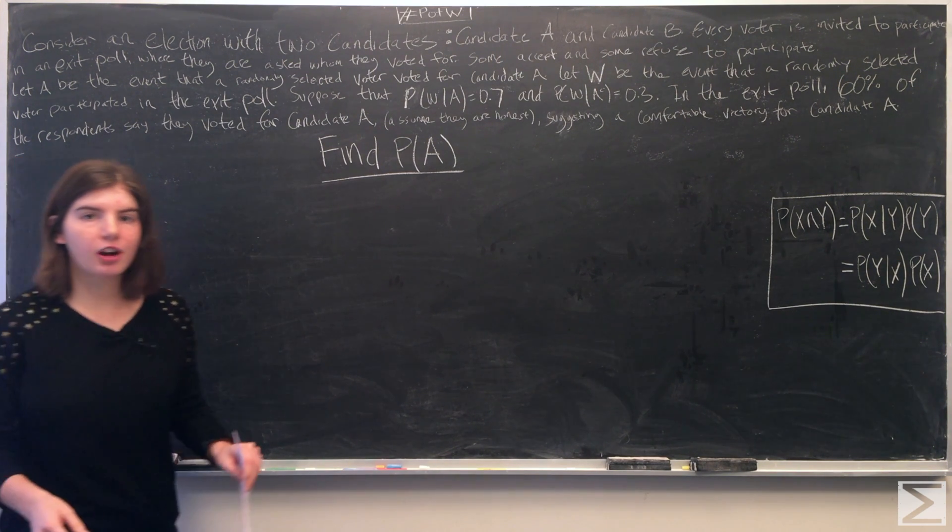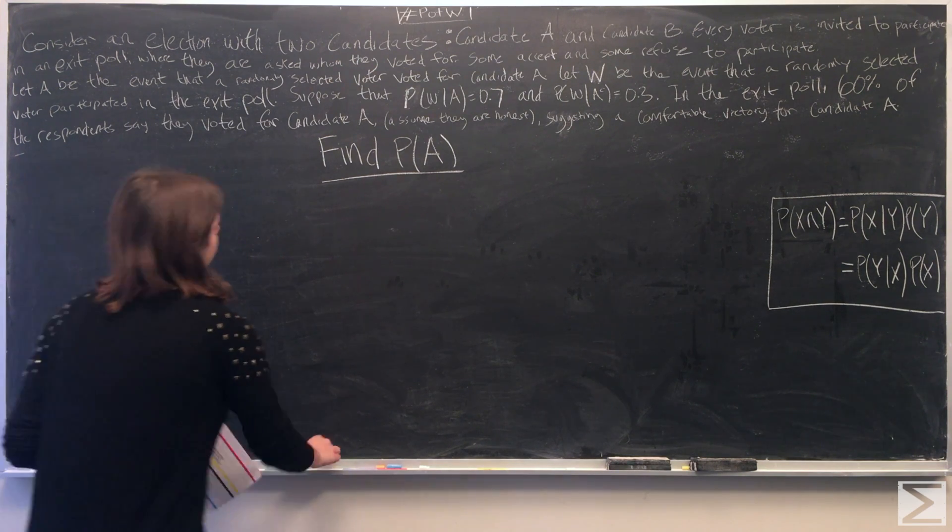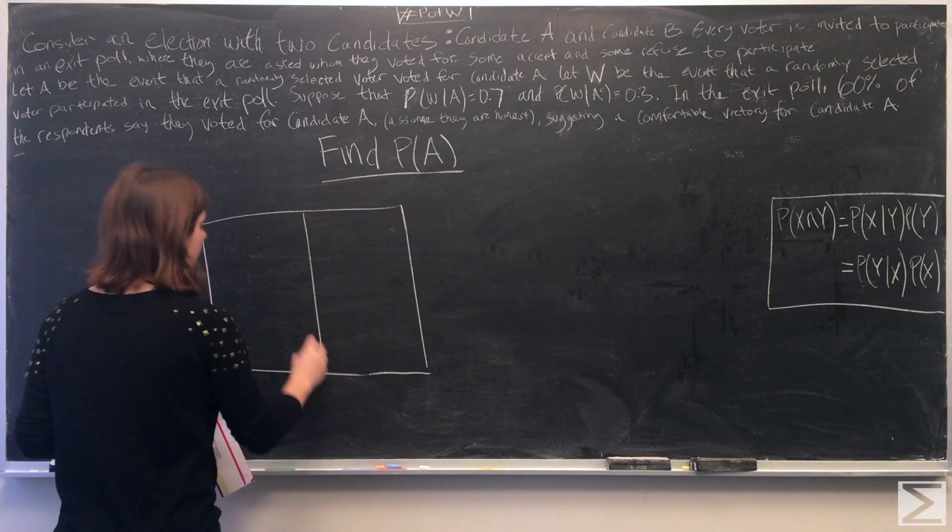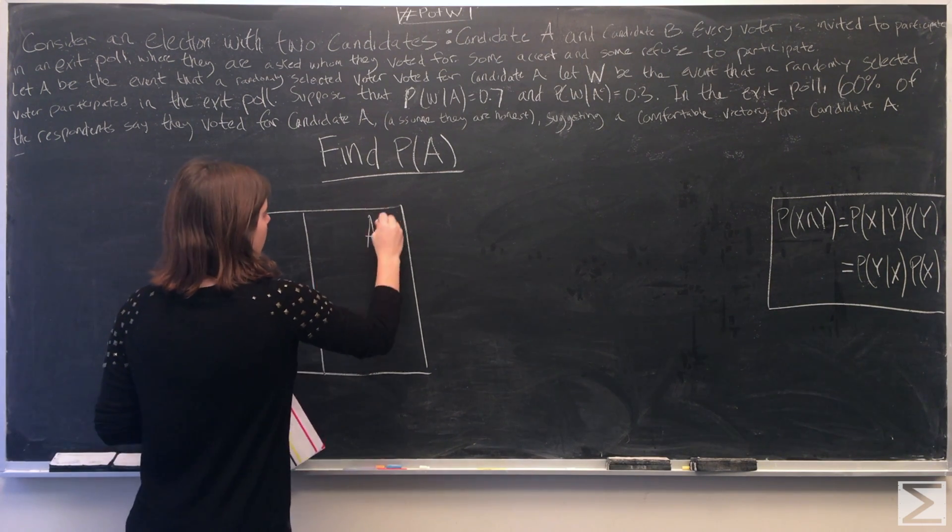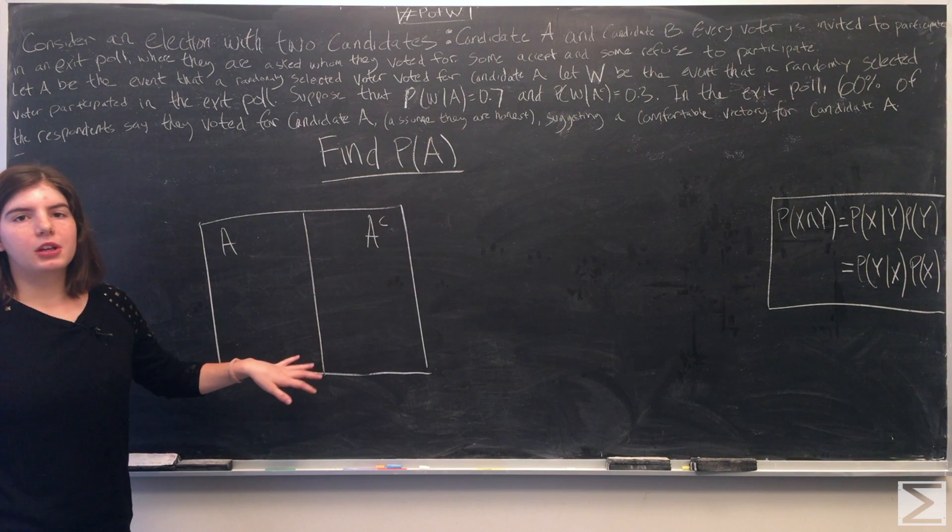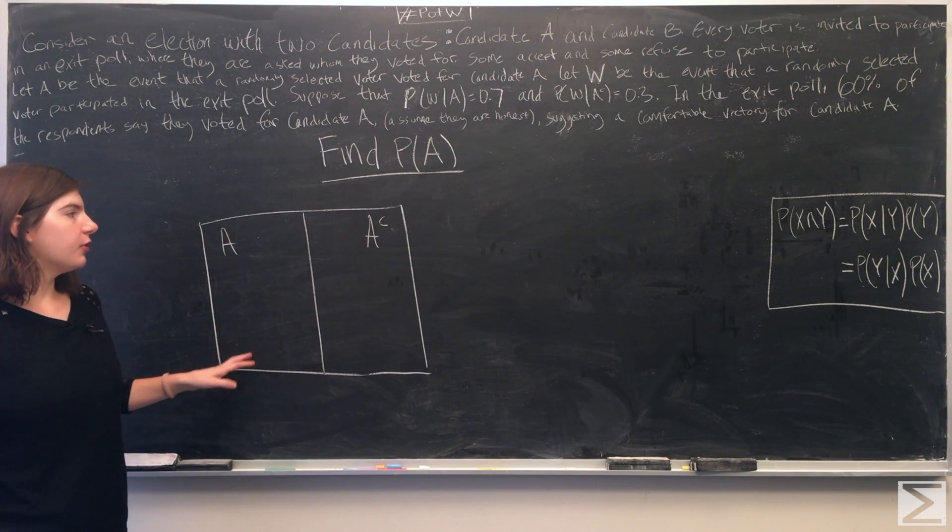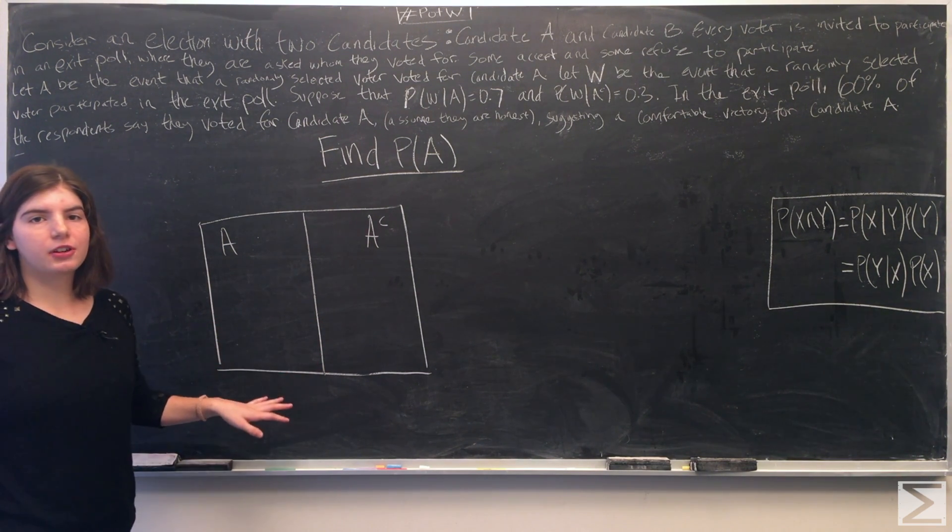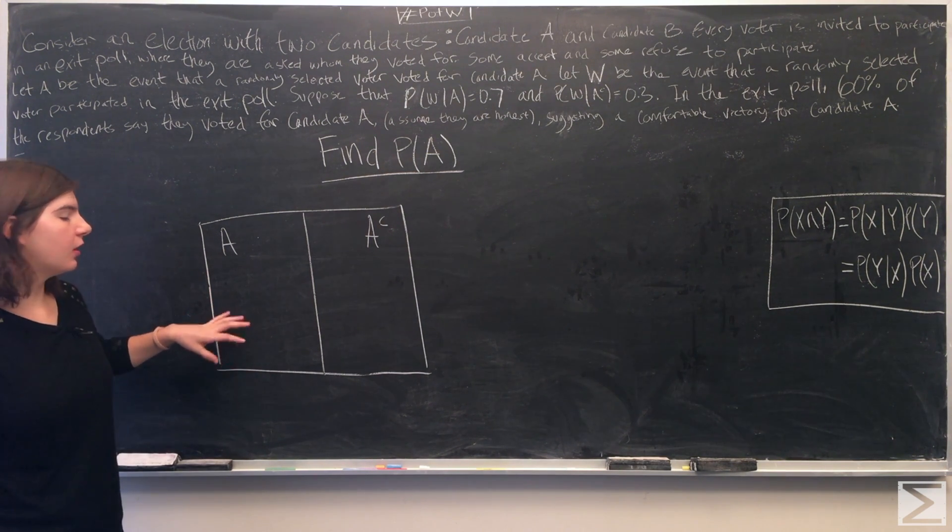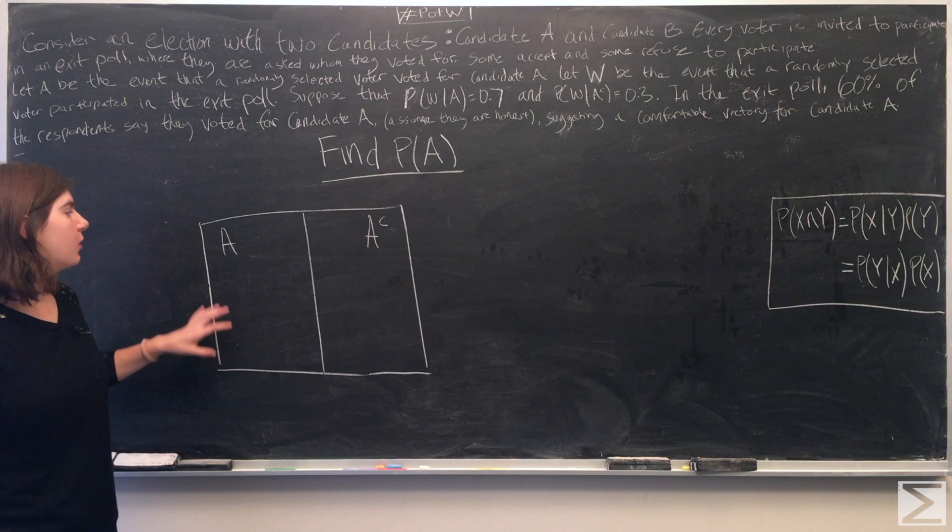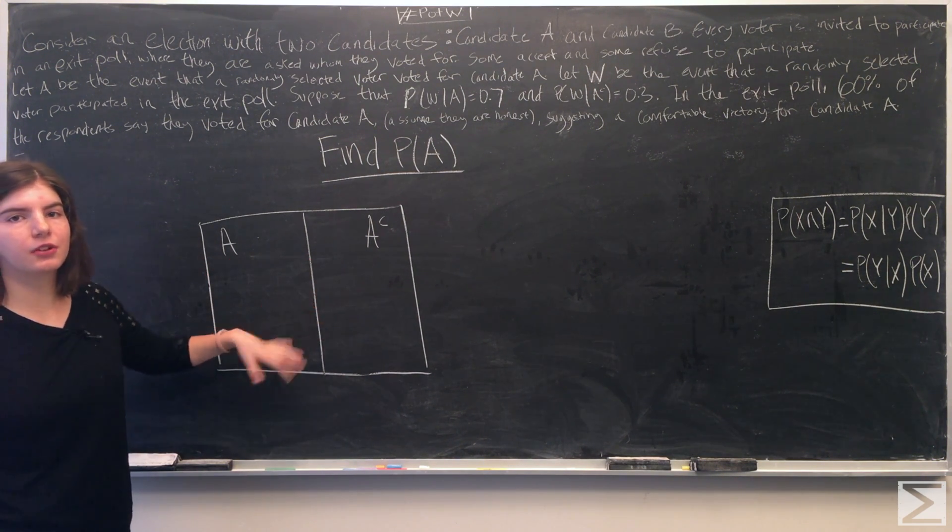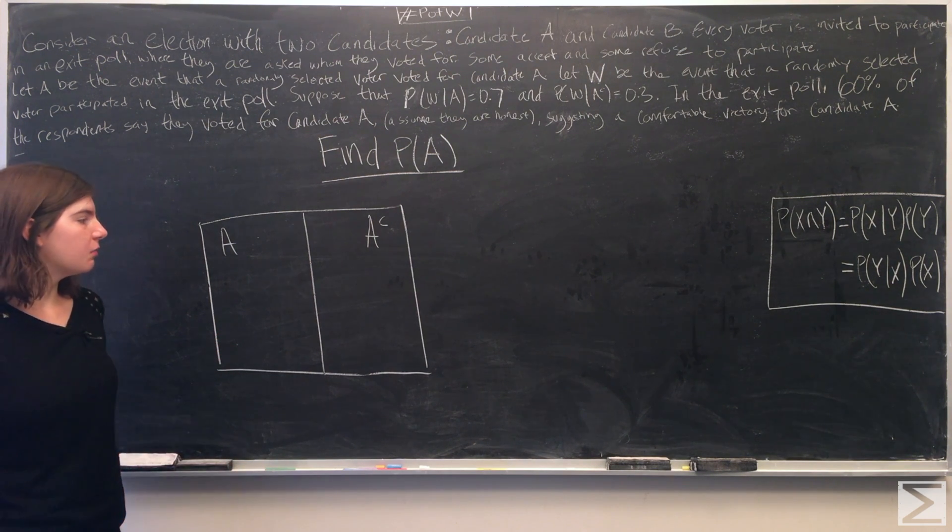So we're going to draw a diagram to help us. You want to notice that event A and A complement are disjoint. They're mutually exclusive, which means they're never going to occur together. The probability that a randomly selected voter voted for candidate A and did not vote for A, those probabilities will never meet.